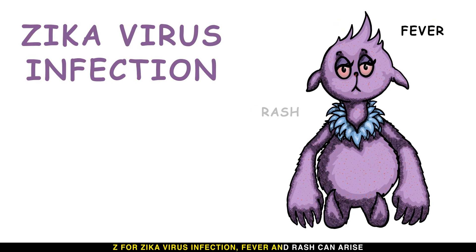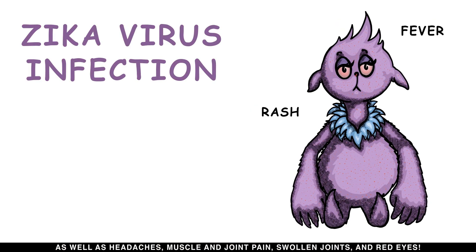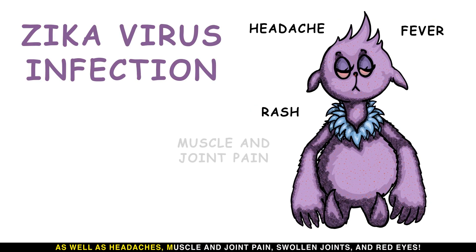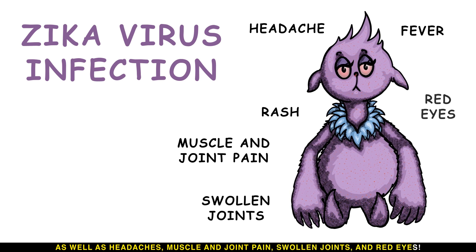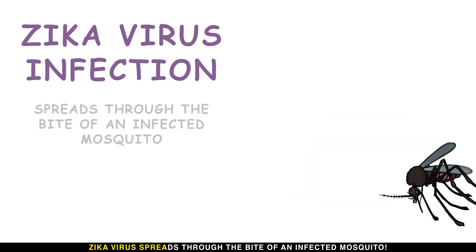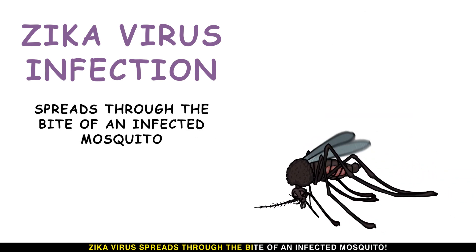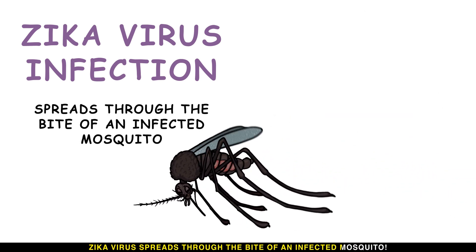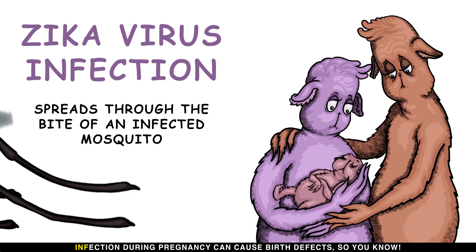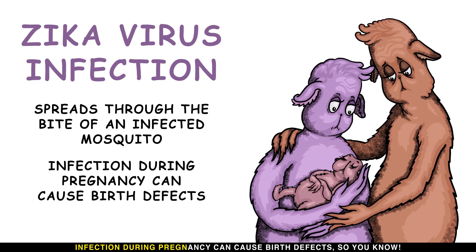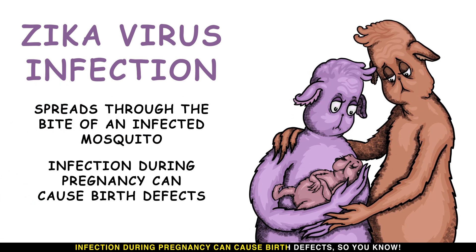Z is for Zika virus infection — fever and rash can arise, as well as headaches, muscle and joint pain, swollen joints, and red eyes. Zika virus spreads through the bite of an infected mosquito, and infection during pregnancy can cause birth defects.